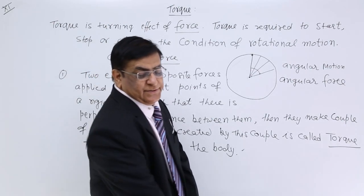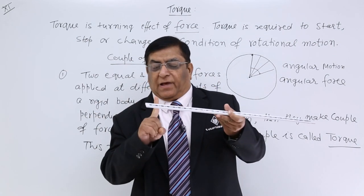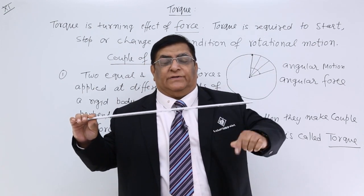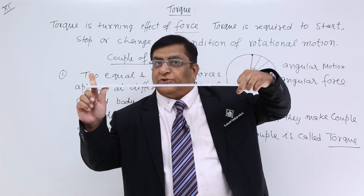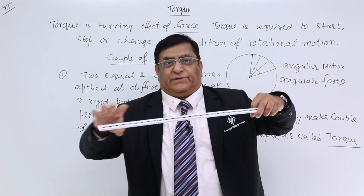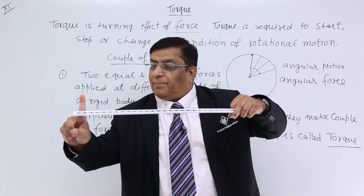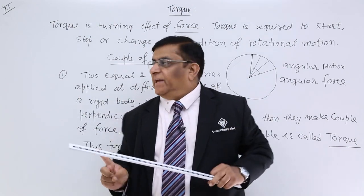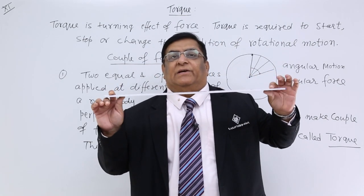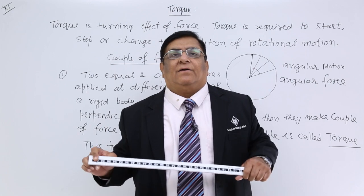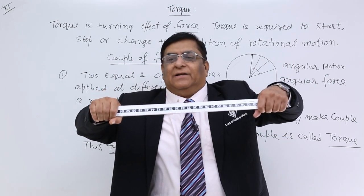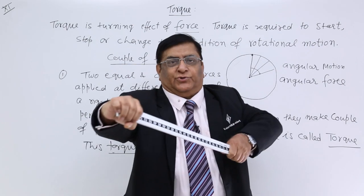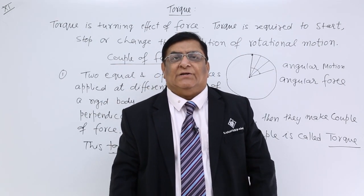Let's describe these two forces. We have a rigid body. I apply one force of one Newton upward at one point, and one Newton downward at a different point. These are two equal and opposite forces acting at two different points, with a perpendicular distance between them — they are not working in one line. All these conditions have been met, so this will create rotation. Consider the handle of a bicycle — I apply force here and force here, and it will turn. That is rotational motion.